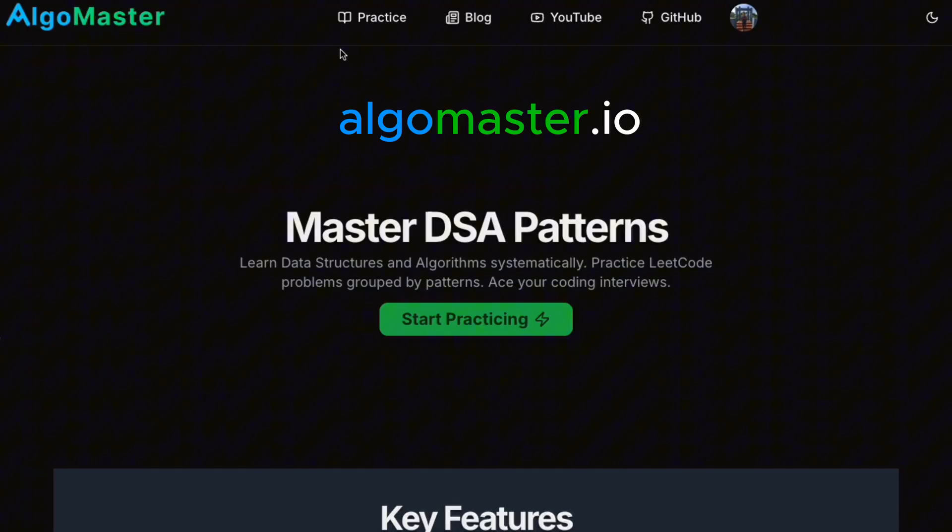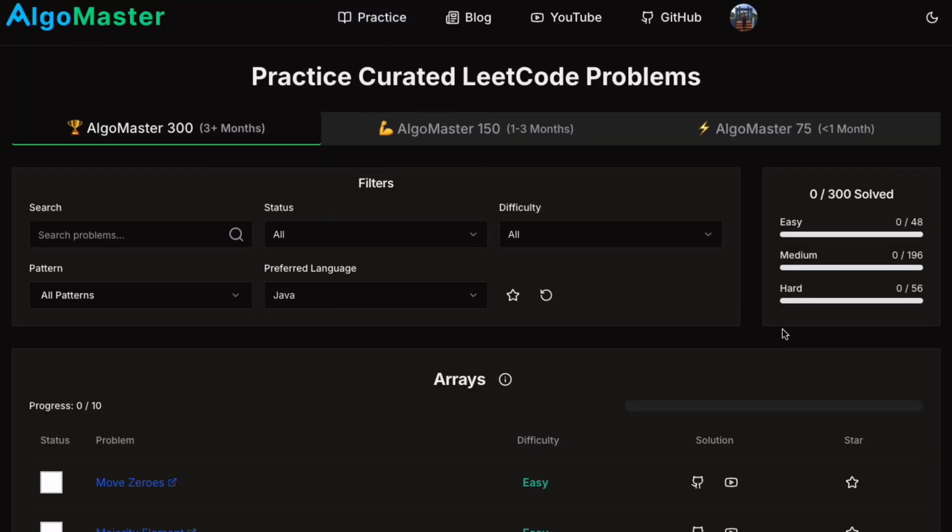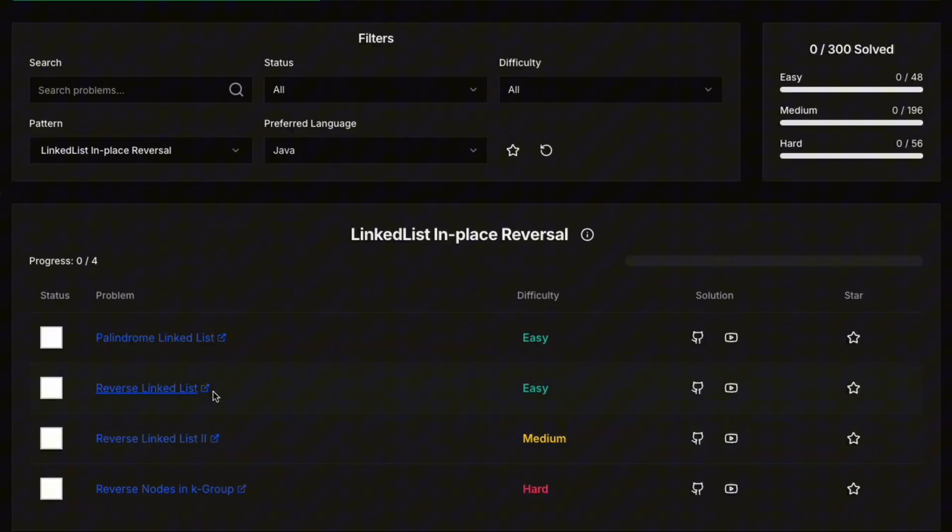problems on algomaster.io. Simply head to the practice page, search for this pattern or use the filter dropdown and start practicing. On this platform, you can mark problems as complete or star them for later revision. You can also find the links to GitHub